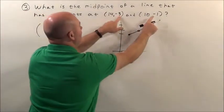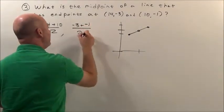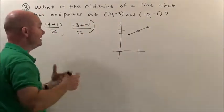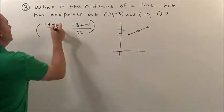Then we're going to add our y's together. Negative three plus negative one divided by two. That'll tell us the middle of the y's and then we'll know where the middle of the entire line is.